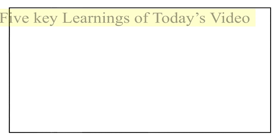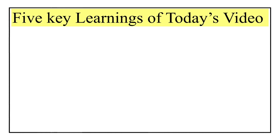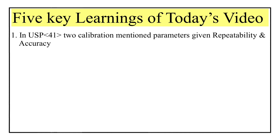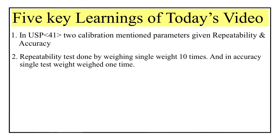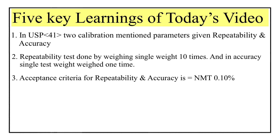Let us quickly revise what we have learned today. We learned five things related to balance calibration mentioned in USP Journal Chapter number 41. Point one: as per USP Journal Chapter 41, there are two test parameters — repeatability and accuracy. Point two: the repeatability test is performed by weighing a single test weight 10 times and calculating standard deviation, while for the accuracy test a single test weight is weighed and the obtained value is compared with the certificate value. Point three: both repeatability and accuracy tests have an acceptance criteria of not more than 0.10 percent.